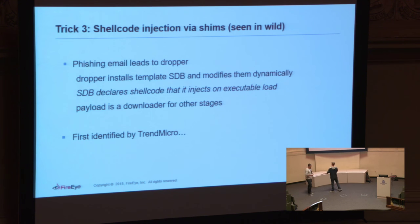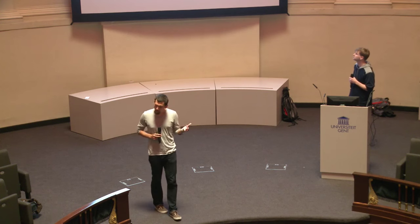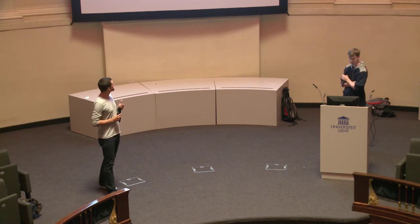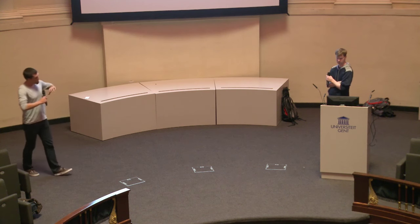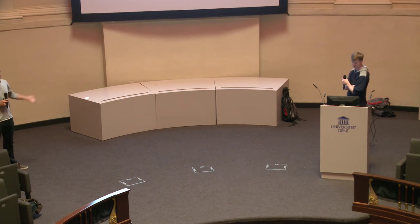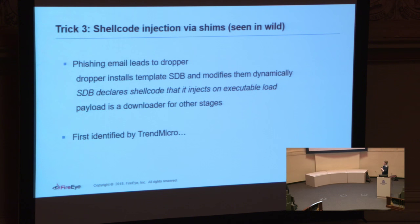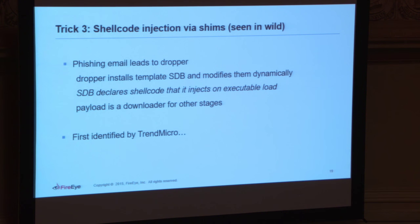Our third case study is another piece of malware called Gookit — a commodity malware family, not a targeted threat, but it does some really neat stuff. It installs an SDB file using SDB install, registered in the registry. When the system boots and the targeted process runs, a shim is applied. What's interesting is that the shim directly patches shellcode into the targeted executable — but only in memory. The shellcode on disk is obfuscated within this complex database format that basically no one knows how to parse right now.